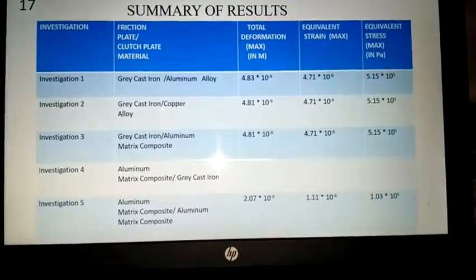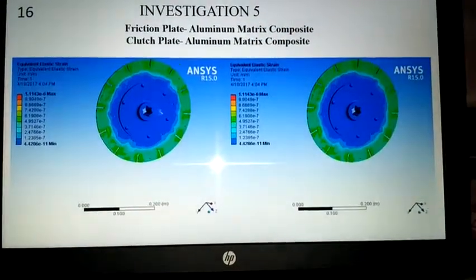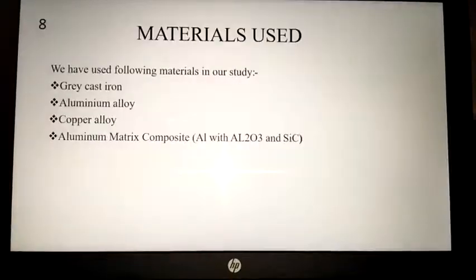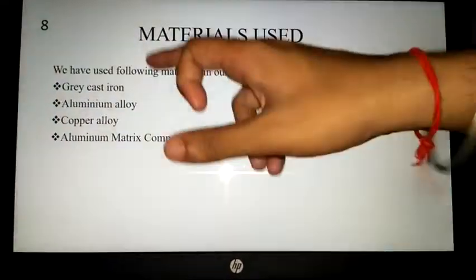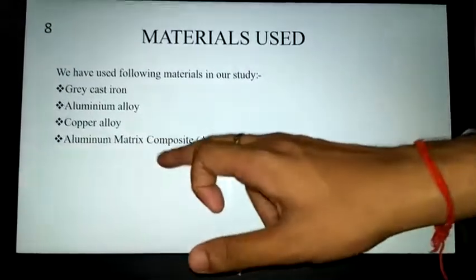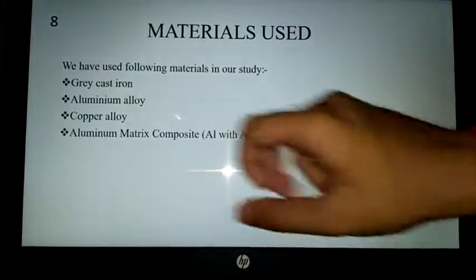Among grey cast iron, aluminum alloy, copper alloy, and aluminum matrix composite, aluminum matrix composite is the best material.